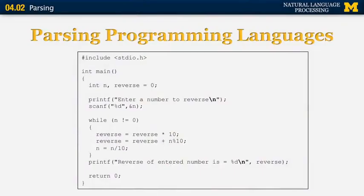Let's consider the problem of parsing. Starting with an example from parsing a programming language, we have a C program to reverse a number. You're all familiar with the syntax of programming languages — they include variables, blocks, statements, and so on. What is very important about computer languages is that their syntax is unambiguous.